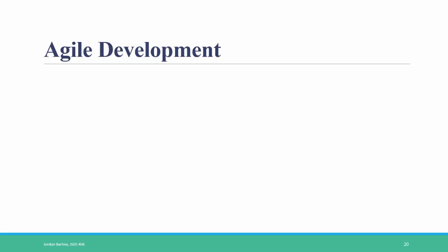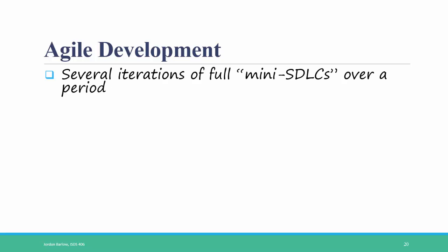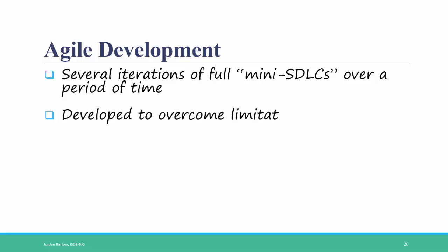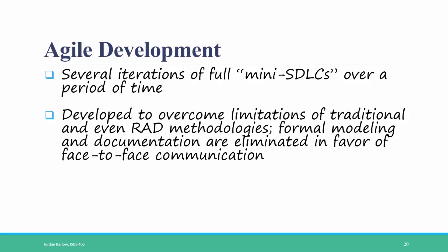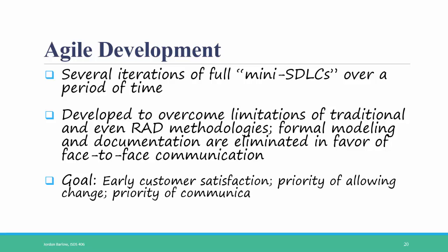The final grouping of methodologies is agile development. Agile development refers to carrying out the SDLC in a series of several iterations of full mini SDLCs over a period of time — so you do planning, analysis, design, and implementation over and over until you're satisfied that the system is at a good place. Agile development was developed to overcome limitations of the traditional and even the RAD methodologies. Formal modeling and documentation are eliminated in favor of face-to-face communication with the user. The goal of agile development is early customer satisfaction, the priority of allowing changing requirements, and the priority of good communication with the user over formal and slow documentation.